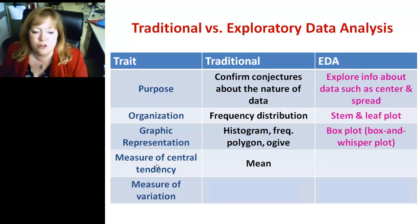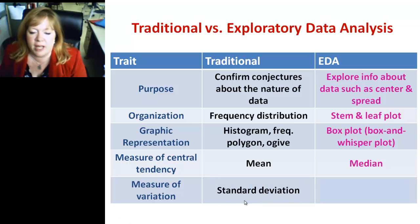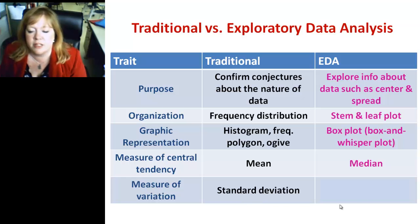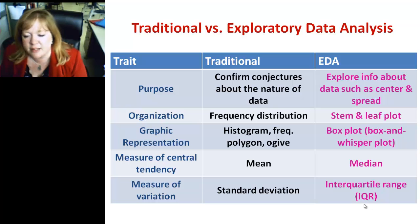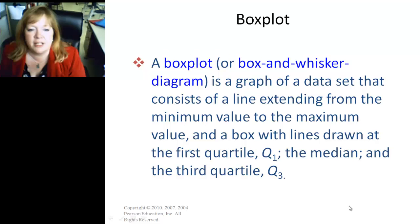The measure of central tendency traditionally is the mean. In EDA, we're going to use the median. And the measure of variation we had was standard deviation for traditional statistics, and the interquartile range — the IQR — which from the last set of notes, you should know is Q3 minus Q1, quartile 3 minus quartile 1.